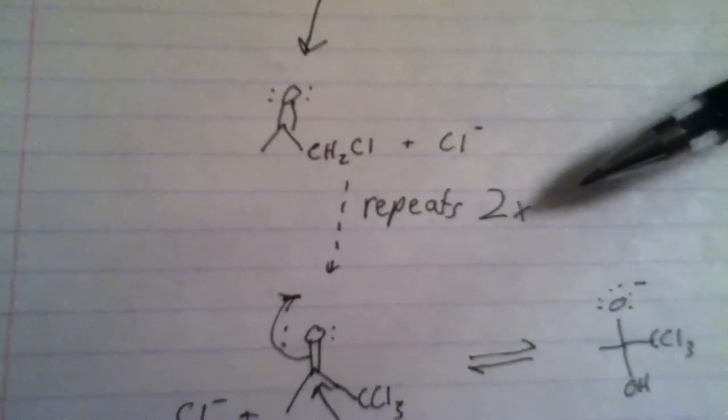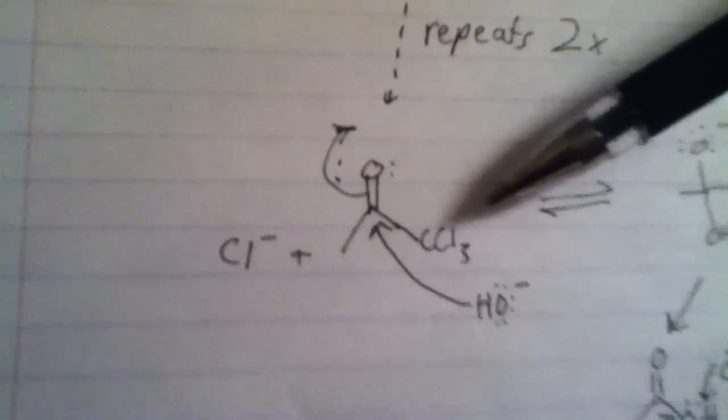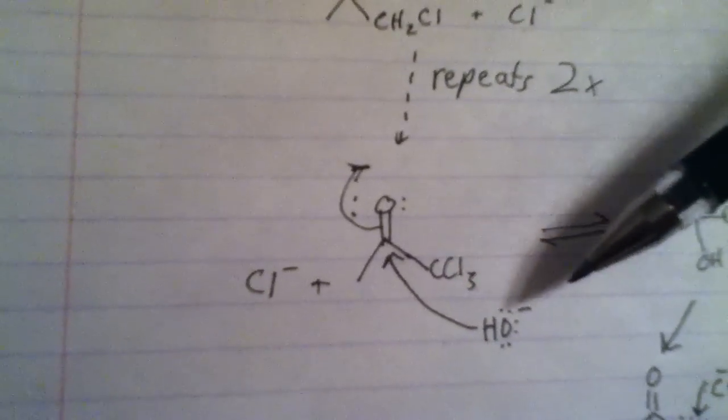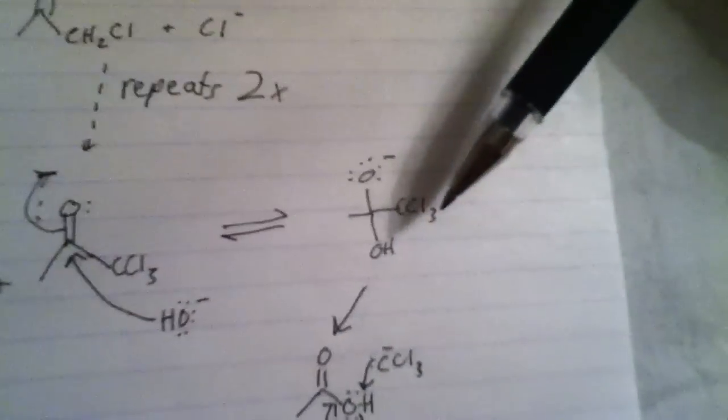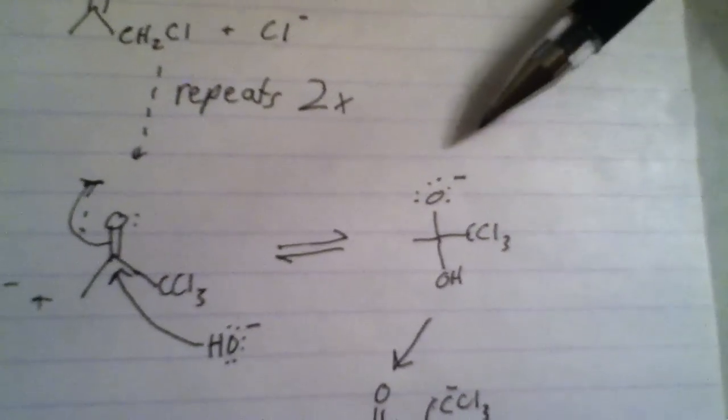This process repeats twice more, generating trichloroacetone. The nucleophilic hydroxide ion attacks the carbonyl, giving a carbon-oxygen single bond and an anionic oxygen.